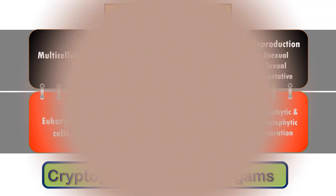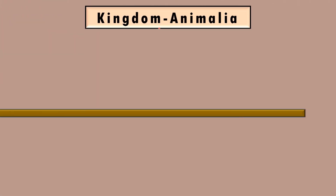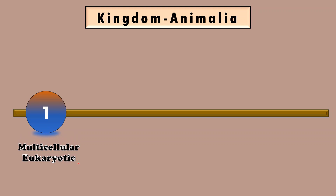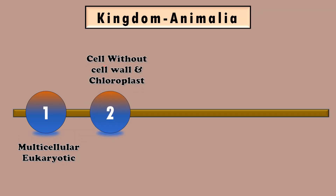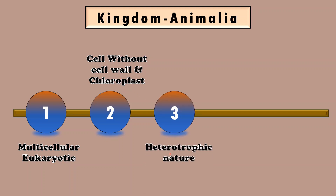The other group is Kingdom Animalia. These organisms are also multicellular and eukaryotic in nature. The cells are without cell wall and chloroplast, so these organisms are heterotrophic in nature. These organisms are found in air, water, as well as soil. That is, they are omnipresent — present everywhere.